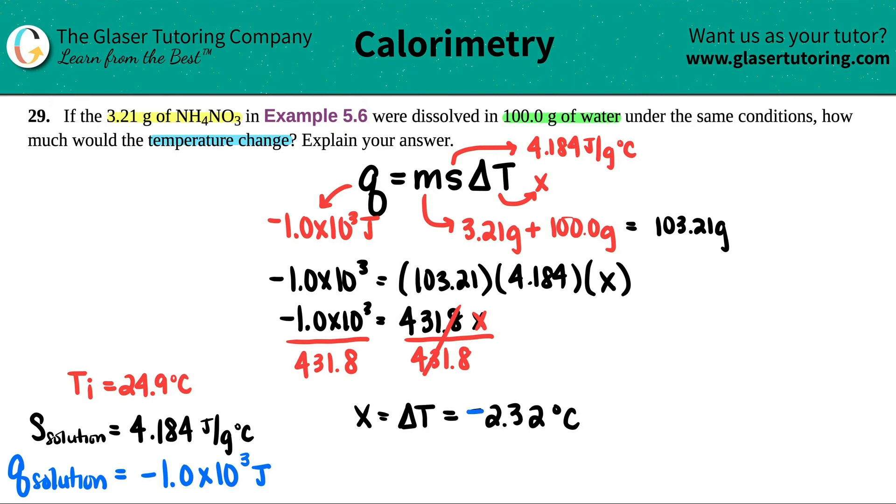Now remember, this negative represents that the temperature has dropped. So as you were going from your initial temperature to your final temperature, it fell, it dropped.